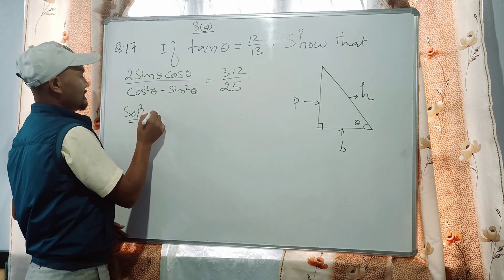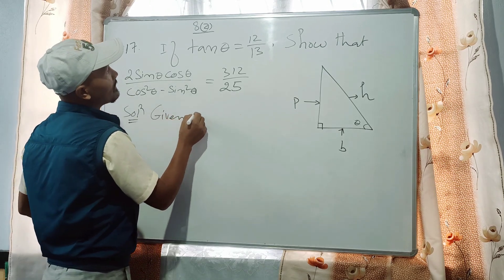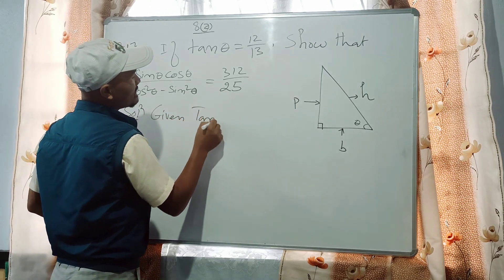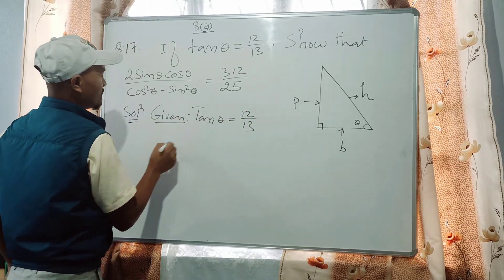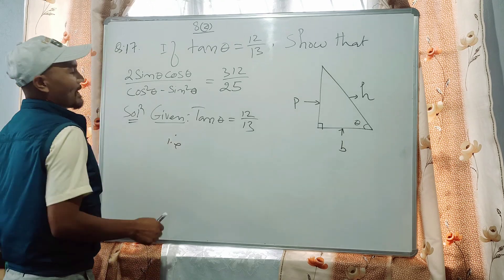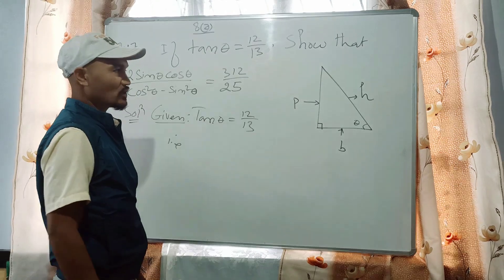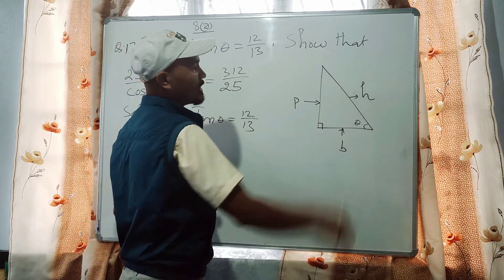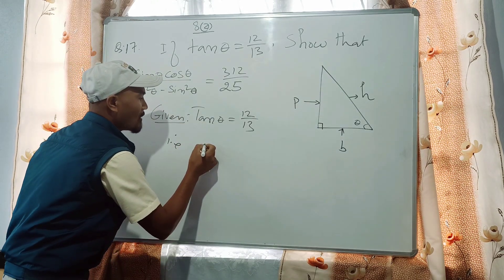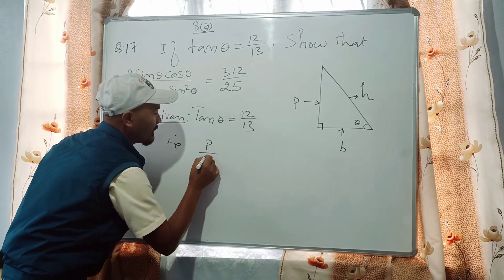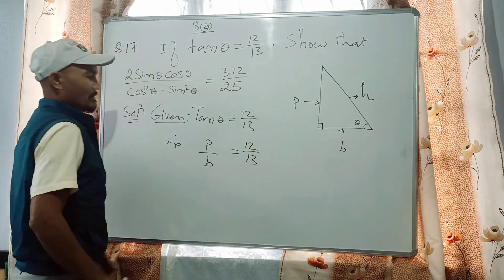So what is given? It is given that tan theta equals 12 by 13. The formula of tan is the ratio of the perpendicular by base.